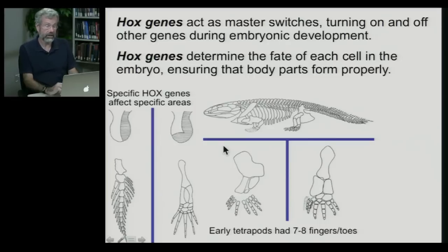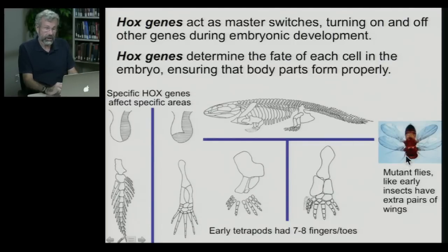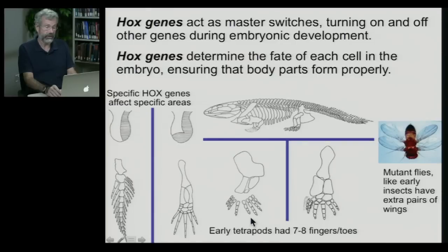One of the things we know in our own evolutionary tree with the tetrapods — any land animal — is that the earliest tetrapods all had seven or eight different fingers and toes on each limb, and through time this has changed so that now we just have five. Mutant flies can still grow four wings, and the earliest members of this lineage also had four wings. Somewhere in evolution the flies dropped two of their wings and became diptera, which means two wings. So we have mutations that can cause a doubling in the number of wings in flies, can affect how many fingers and toes we have, and whether we even have fingers versus flippers.